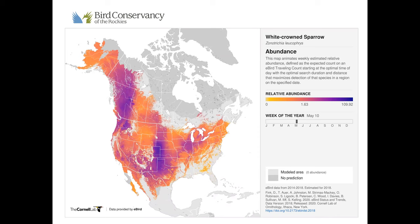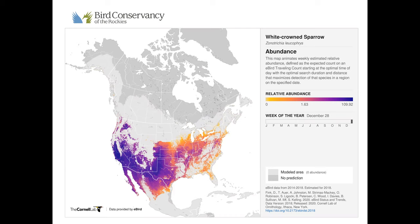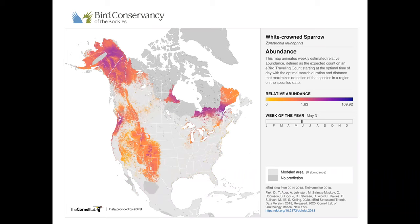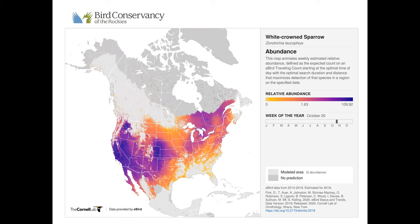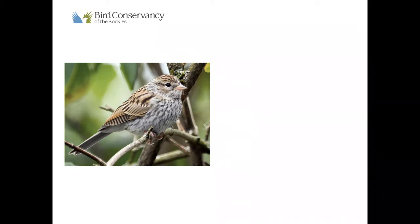Here's an abundance map from eBird.org showing where White-crowned Sparrows are during different times of year. The right side shows the week of the year from January to December. Relative abundance shows how many birds have been seen in each location. White-crowned Sparrows spend their summers in high-altitude mountain ranges or up in northern Canada and Alaska, then you can see movement back down through migration. You can see these birds pretty much throughout North America at some point in time.